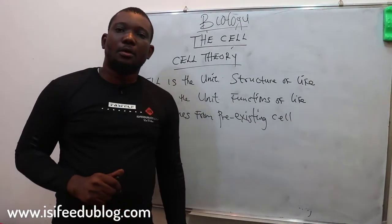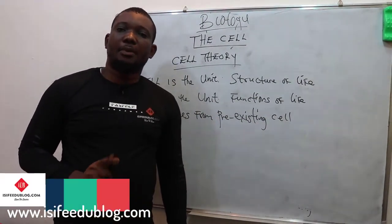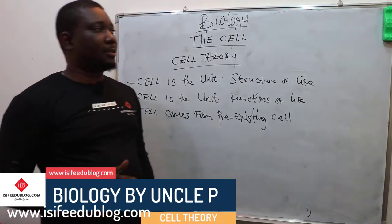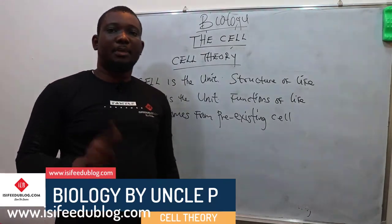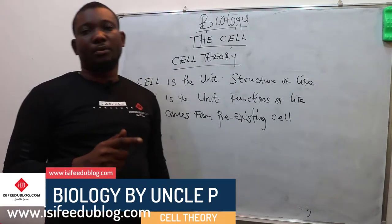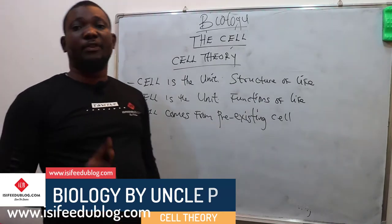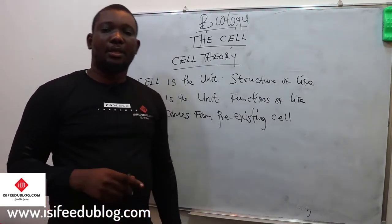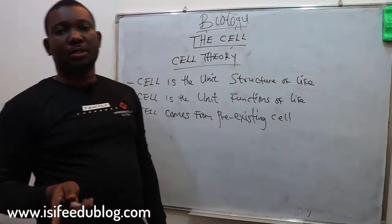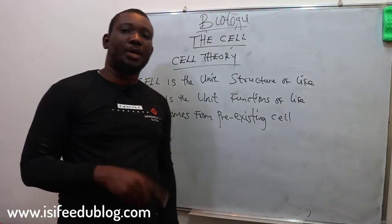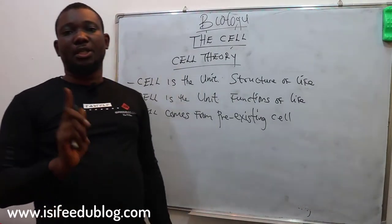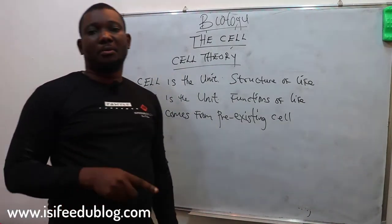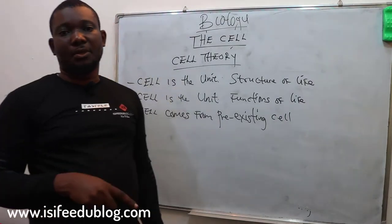We'll be going by the scientists that made some useful contribution about the development of cell theory, like Robert Hooke, Robert Brown, Antonie van Leeuwenhoek, as well as Matthias Schleiden and Theodor Schwann.